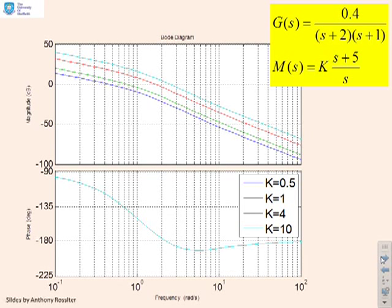So here are the Bode diagrams and you'll see the legend given here to make it clear. So K equals 1 is the green line. K equals 0.5 is the blue line. K equals 4 is the red line. And K equals 10 is the cyan line. So what is happening to these Bode diagrams? We'll do several observations, one at a time.